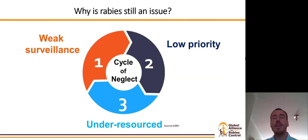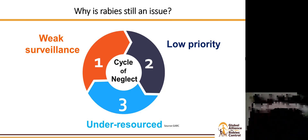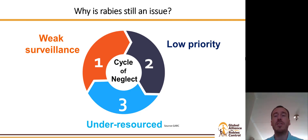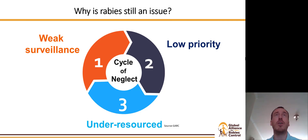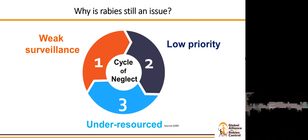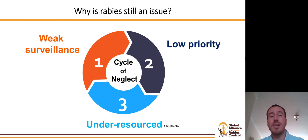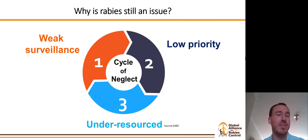So then why is rabies still an issue? It comes down to the cycle of neglect, where there is weak surveillance. Because there is weak surveillance, there is a lack of data for decision makers to prioritize this disease. Because there is this low priority, they do not allocate funds and resources, and therefore rabies remains under-resourced. Because it is under-resourced, there is again weak surveillance and a lack of effective intervention efforts, and the cycle continues.